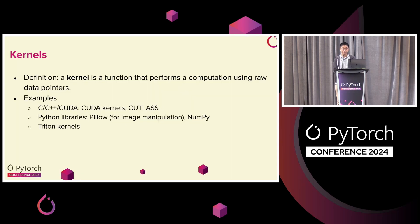Let's start with some definitions. A kernel is a function that performs a computation using some raw data pointers. Some examples: you might write a CUDA kernel that takes in some data pointers and does some compute with a tensor on a GPU, or you might write a custom C or C++ kernel that takes in a tensor's data pointer and does some manipulation on the data. You can also have a kernel in Python — there are libraries that are basically Python bindings to C++ libraries that do tensor data manipulations. NumPy is an example.